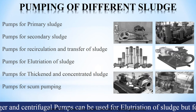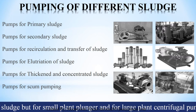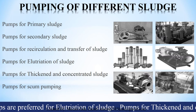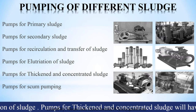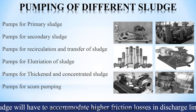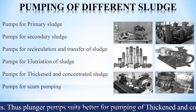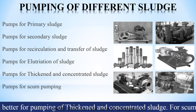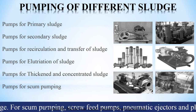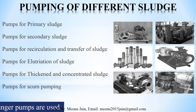Both plunger and centrifugal pumps can be used for incineration of sludge, but for small plants plunger pumps and for large plants centrifugal pumps are preferred. Pumps for thickened and concentrated sludge will help to accommodate higher friction losses in discharge lines. Thus, plunger pumps suit better for pumping of thickened and concentrated sludge. For scum pumping, screw feed pumps, pneumatic ejectors, and plunger pumps are used.